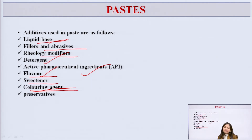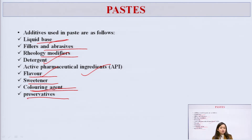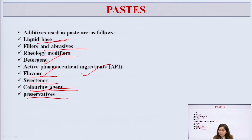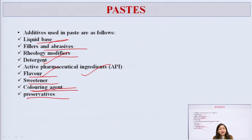Preservative is the last ingredient required while formulating paste. It enhances the shelf life of the product and prevents microbial attack. In summary, the various ingredients required when formulating paste are: a liquid base, detergent, abrasives, fillers, preservatives, sweetening agent, flavoring agent, buffers, and API if a medicated paste is to be formulated.